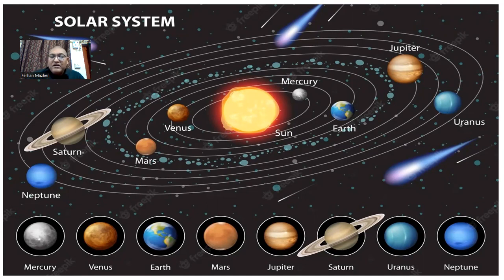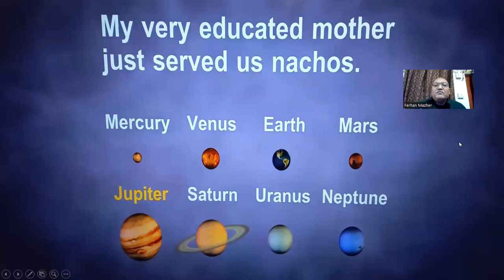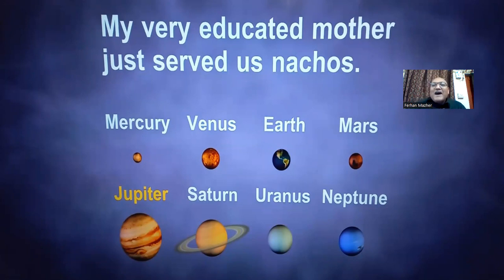For this, you see, a very simple mnemonic. Remember this verse: Mercury, Venus, Earth, Mars, Jupiter, Saturn, Uranus, Neptune. The mnemonic is: My very educated mother just served us nachos.